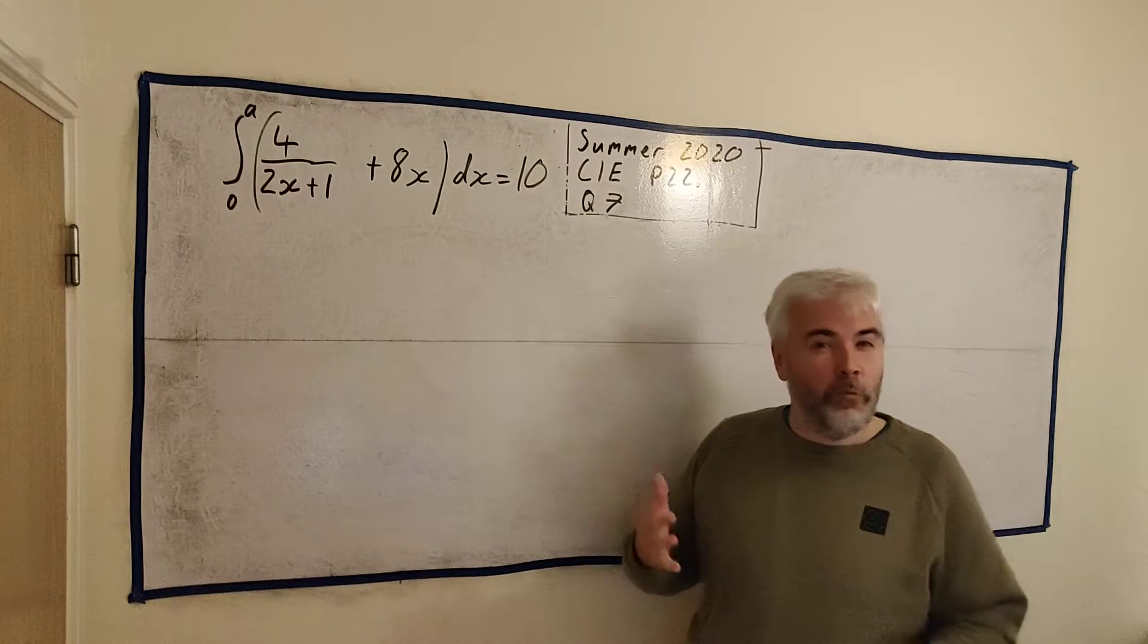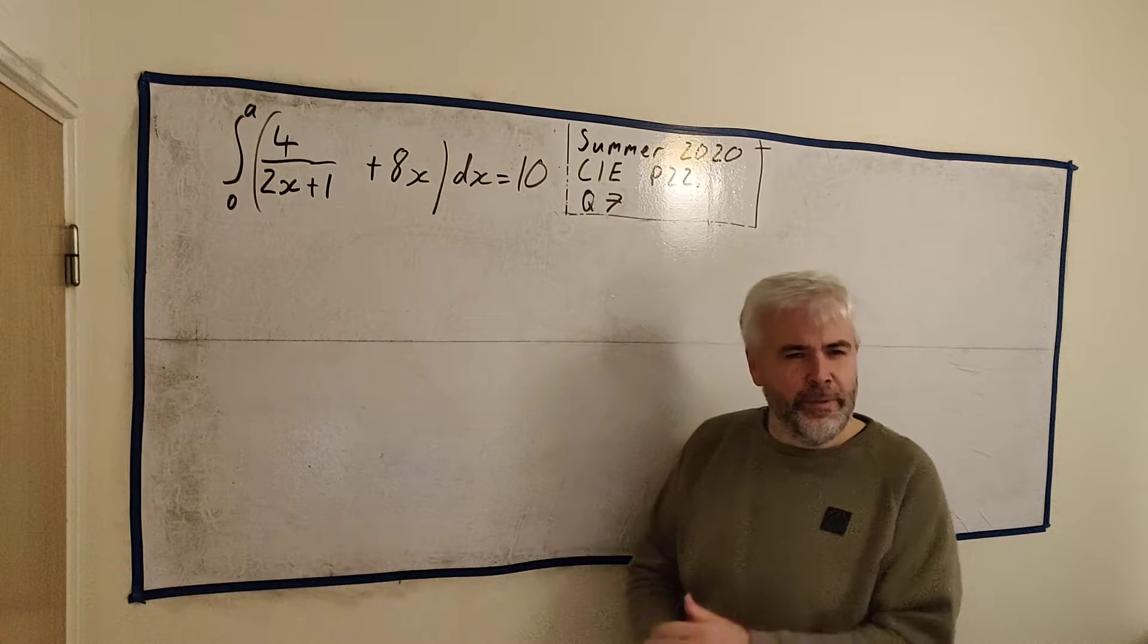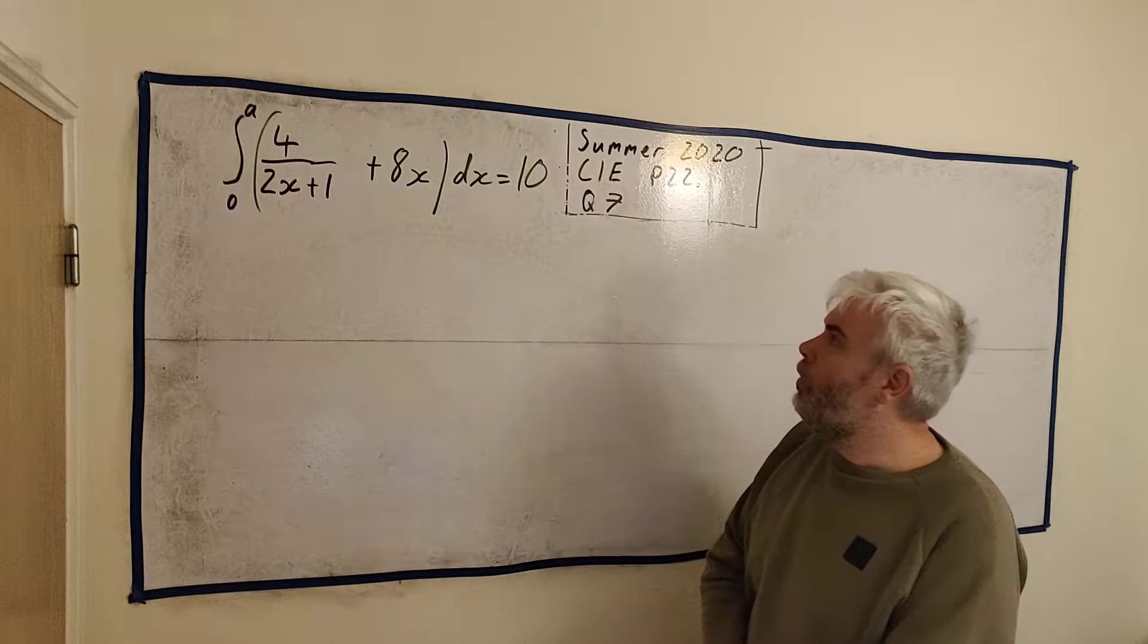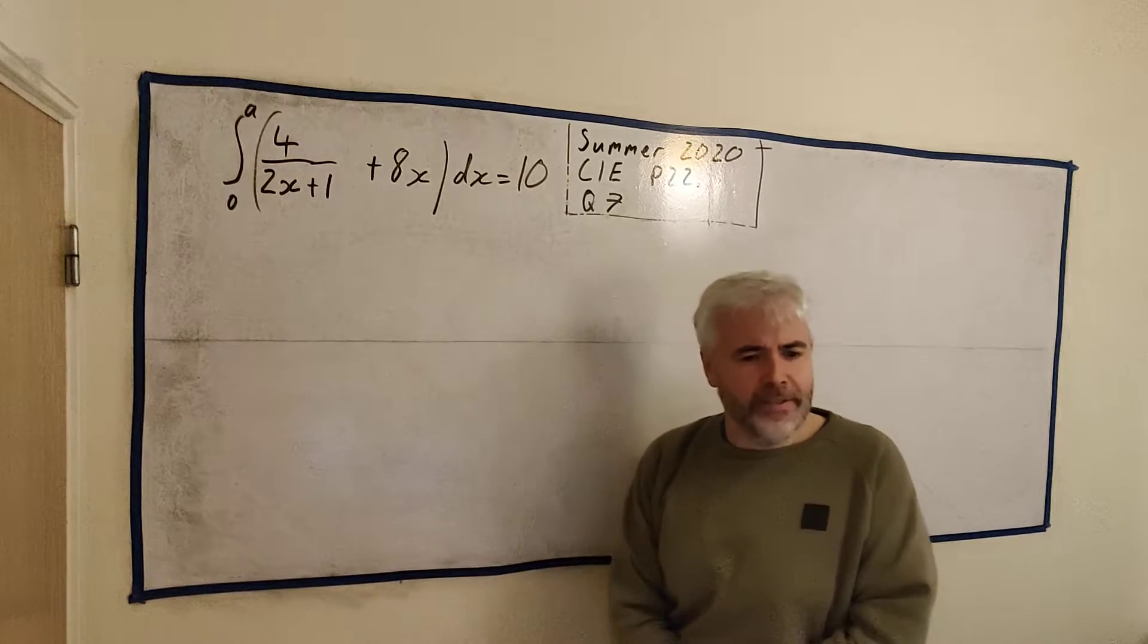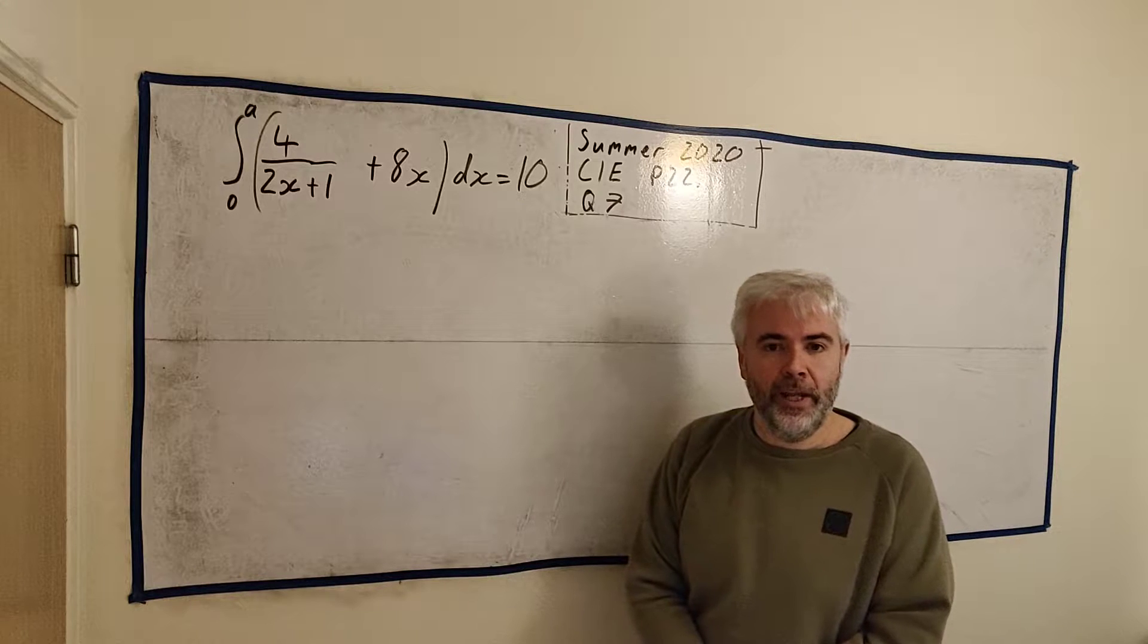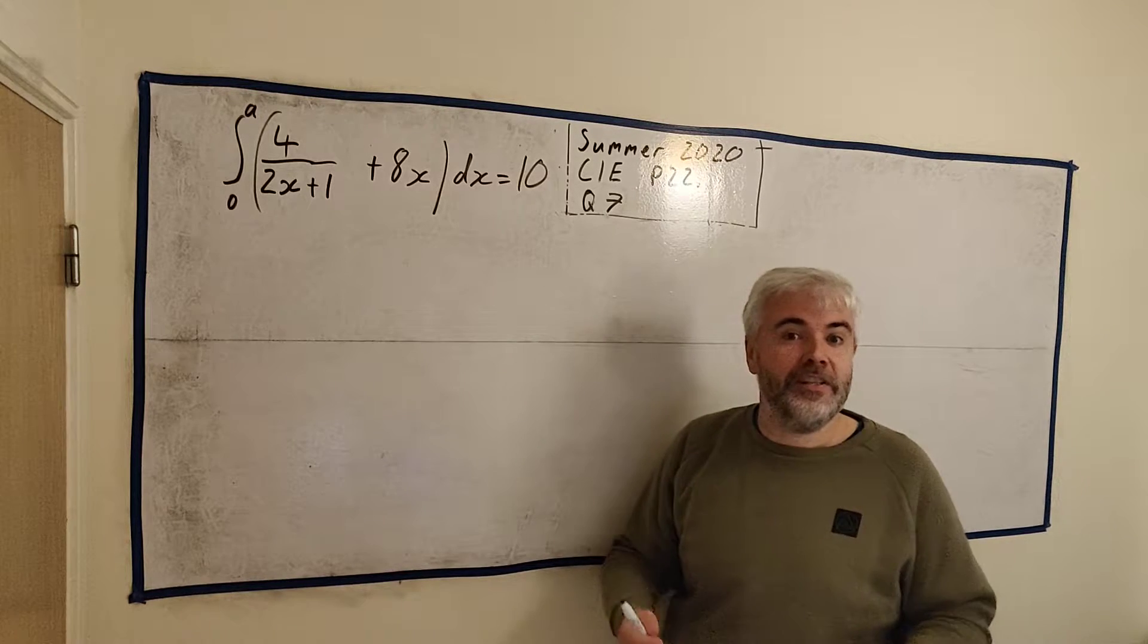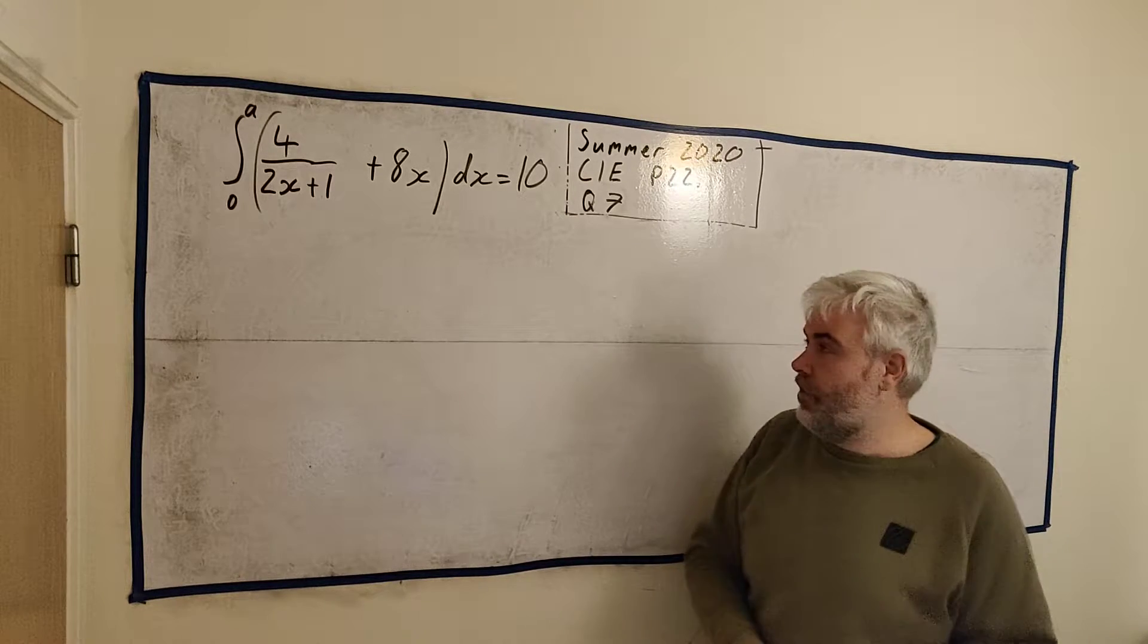So in this question, question 7, we're getting near the end of the exam, so they do get a bit harder. And this question could be split up into probably two main parts. The first part, which we will be doing in part A, will be integration. And then part B and C will be looking more at how to iterate a formula.